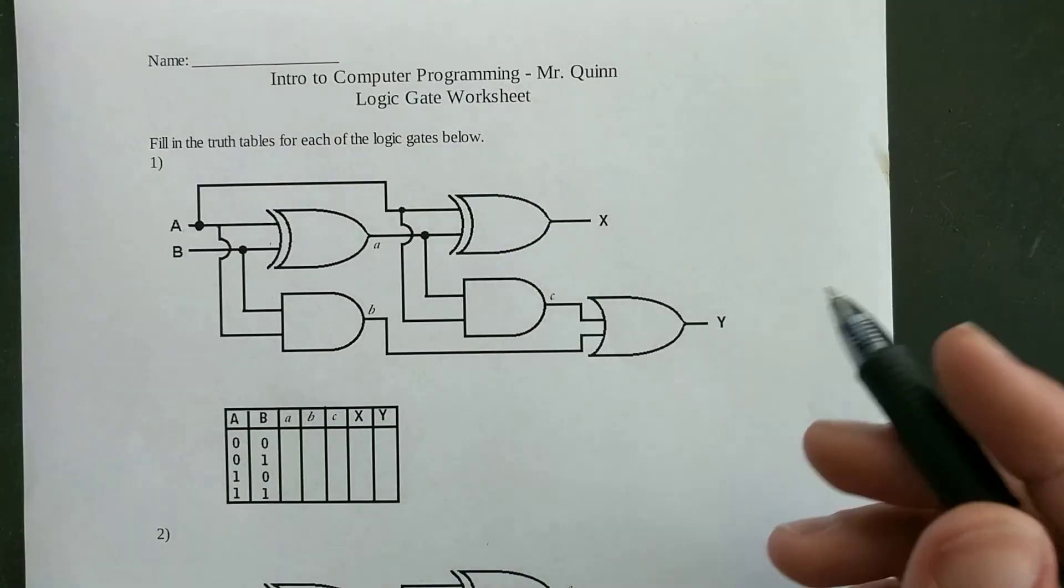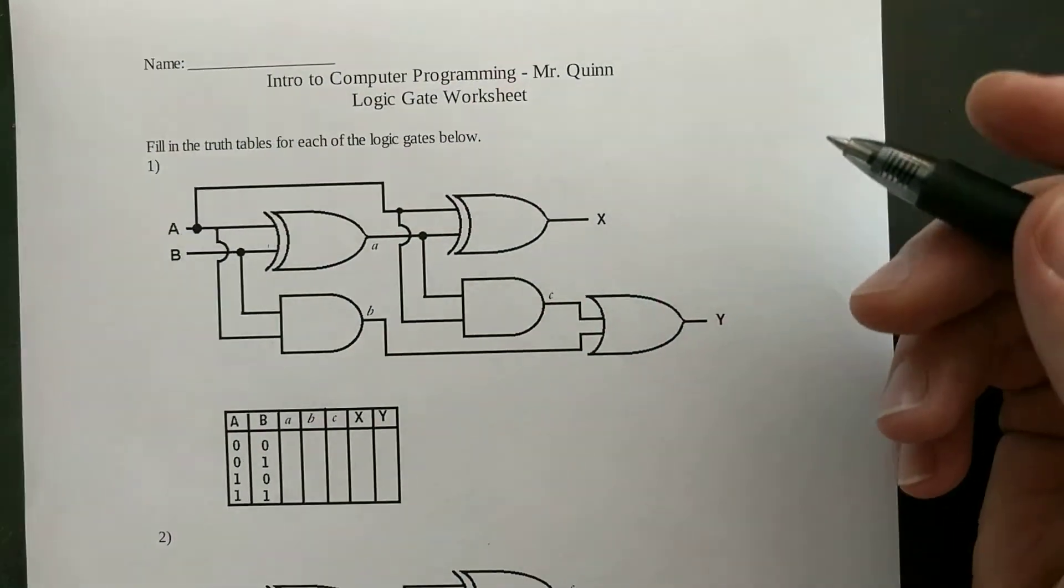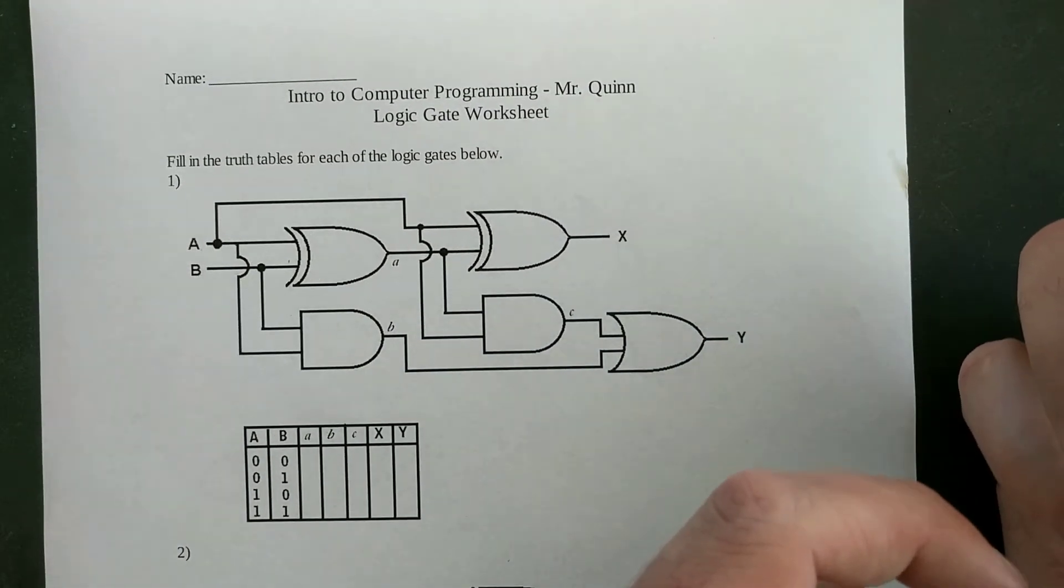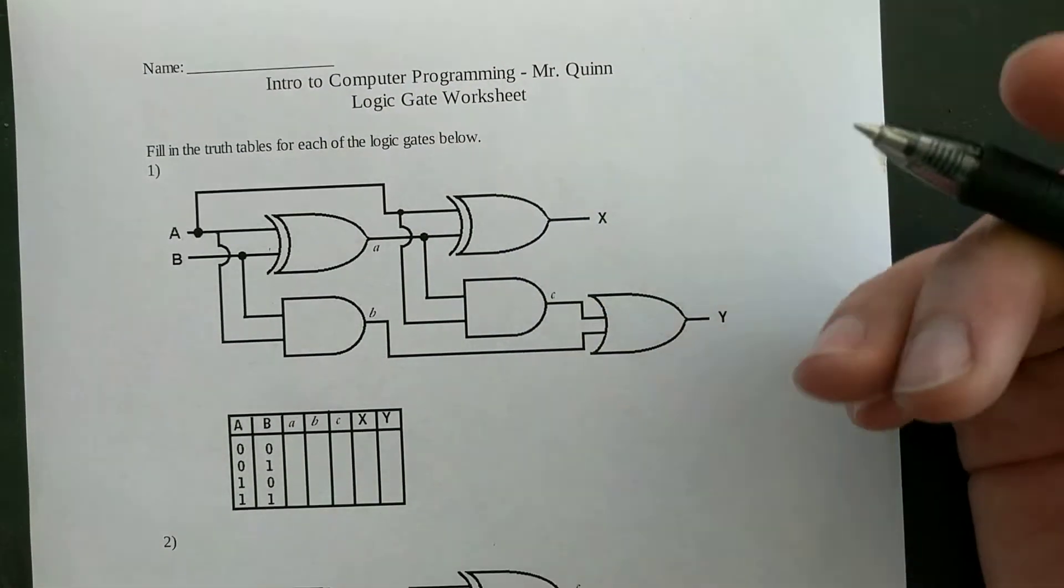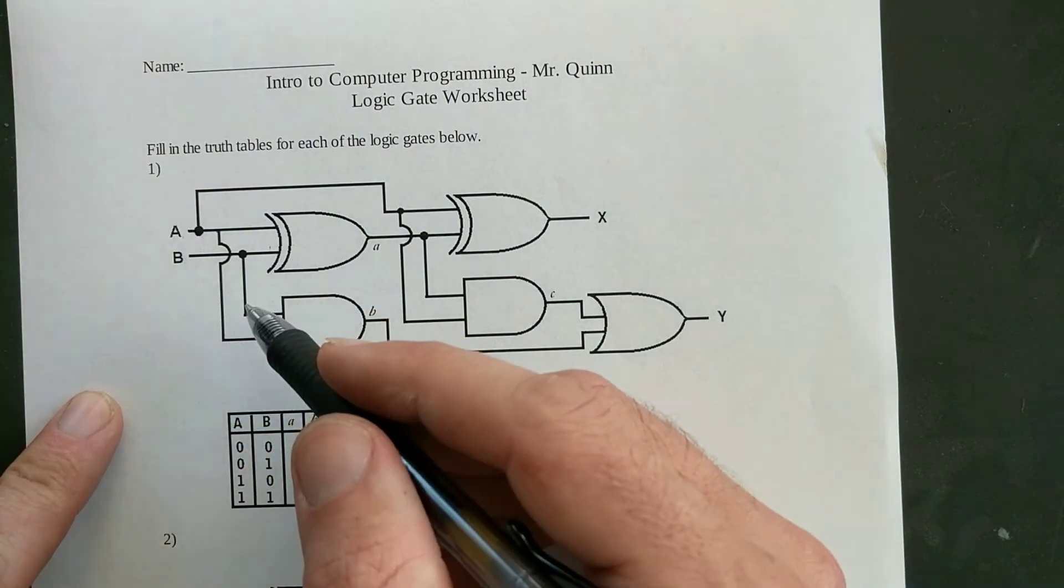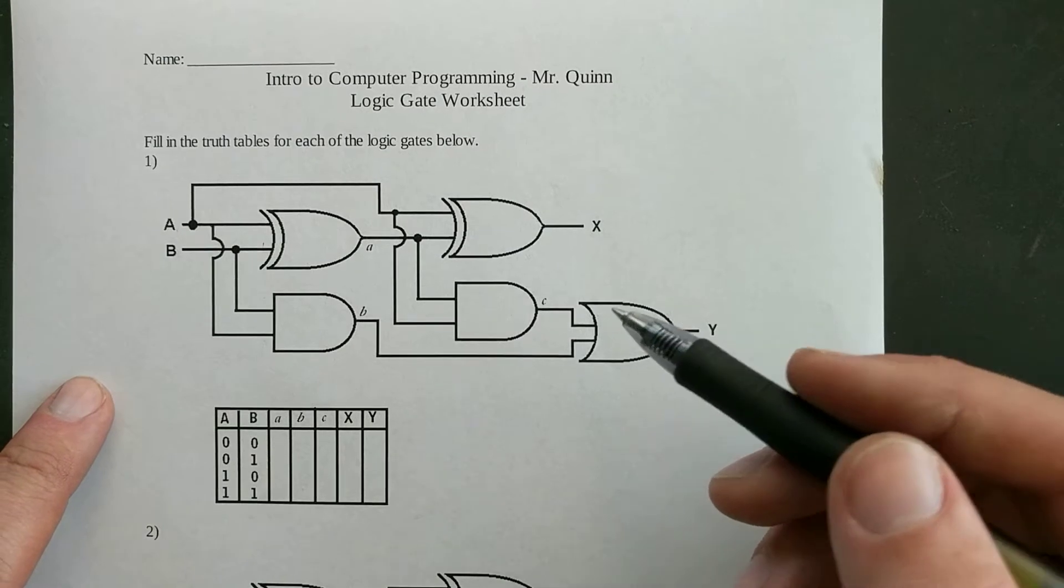And the way that they work is by using a combination of transistors that are basically little tiny electric gates that will either open and close depending on what kind of electricity is flowing through, and the result of which makes it seem like the computer is thinking or making a decision.